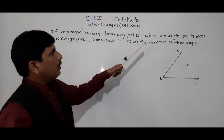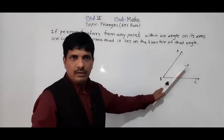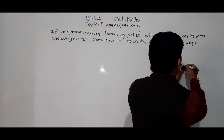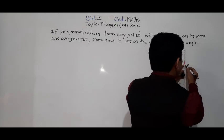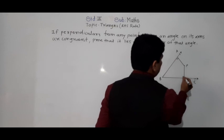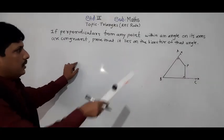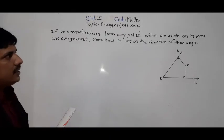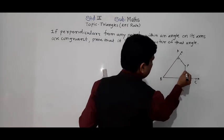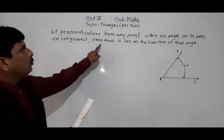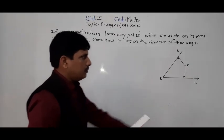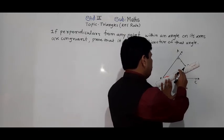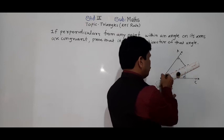The perpendiculars on arms AB and BC are congruent — so the two perpendicular lengths from P are equal. Then we have to prove it lies on the bisector of that angle, meaning point P lies on the bisector of angle B. If we construct the bisector of angle B, it will pass through point P. In short, we need to show angle 1 equals angle 2.